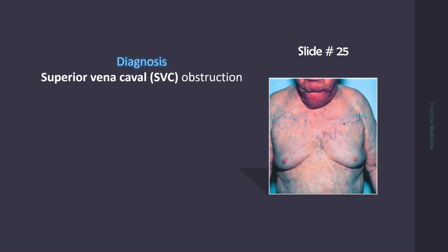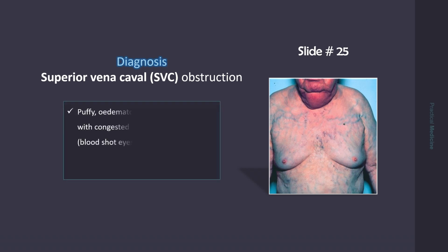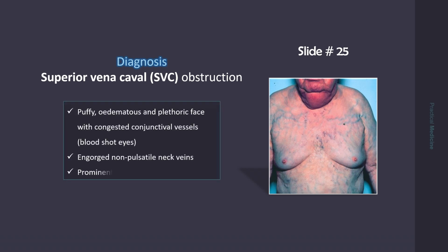The appearance is due to obstruction of the superior vena cava. There is puffy, edematous, and plethoric face with congested conjunctival vessels. Neck veins are engorged and non-pulsatile, and veins on the chest also become prominent.